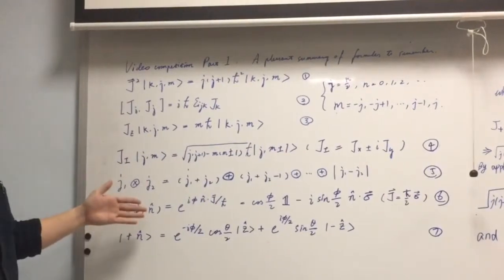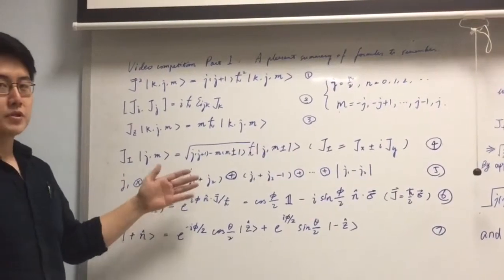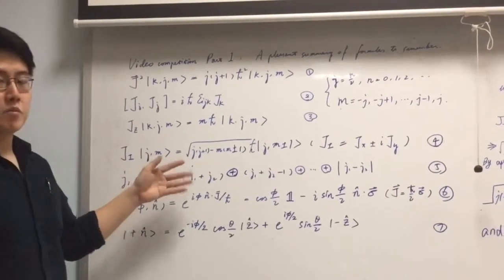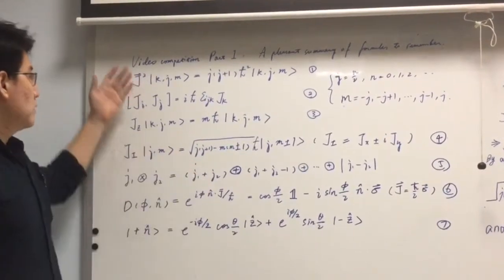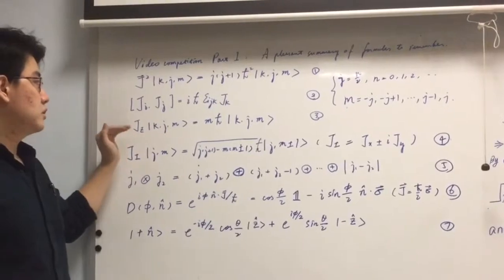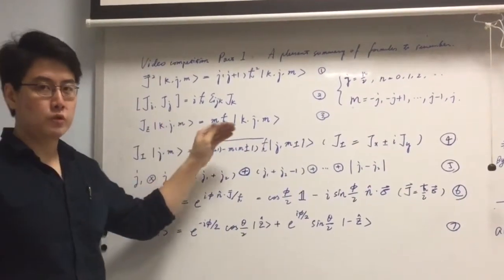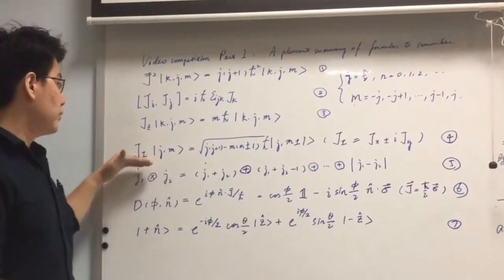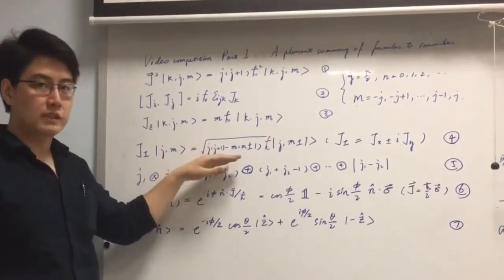We believe that these are the seven most important pointers related to the quantum angular momentum theory in this course. The first three are very fundamental and are used to derive many other crucial relationships. The fourth one would be a very good example.